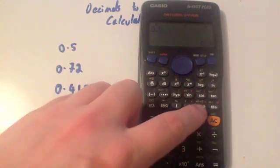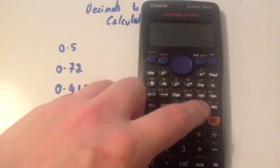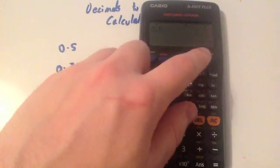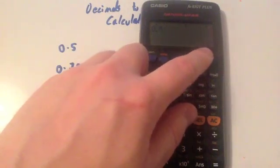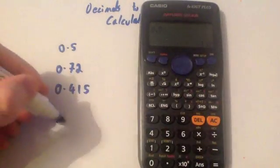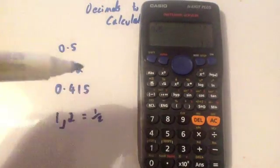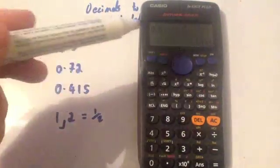Next, press the SD button here so it'll change to one comma or one fraction sign two. That one line two means a half. So that's what that means. The answer is a half.